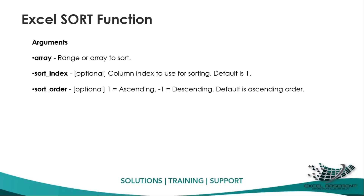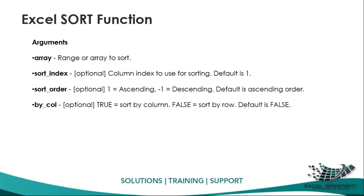'Sort_order' means if you want to sort ascending, write 1; for descending, write minus 1. If you skip this optional argument, the default is ascending order. 'By_col' means: true sorts column-wise data, and false sorts row-wise data. If you skip it, the default is false.